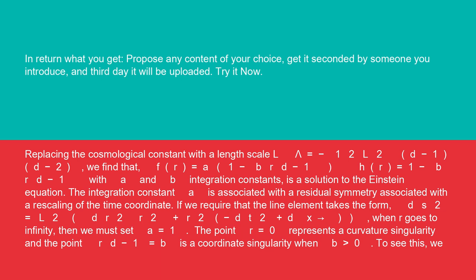Replacing the cosmological constant with a length scale L: Λ = -1/2 L² (d-1)(d-2), we find that f(r) = a(1 - b/r^{d-1}), h(r) = 1 - b/r^{d-1} with a and b integration constants is a solution to the Einstein equation.